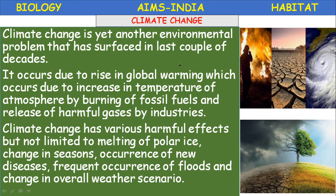Air pollution mainly occurs in two ways: particulate pollution and gaseous pollutants. Particulate pollutants include metallic particles, dust particles, soot — carbon from incomplete burning of fossil fuels — aerosols, and smoke. Gaseous pollutants include carbon dioxide, nitrogen dioxide, hydrogen sulfide, and sulfur dioxide. These are added to the atmosphere and lead to acid rains.